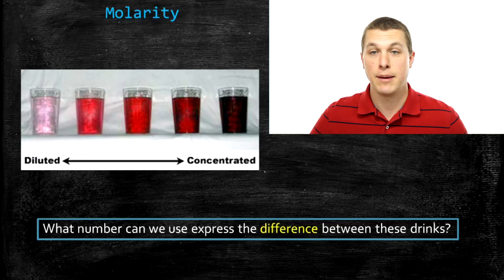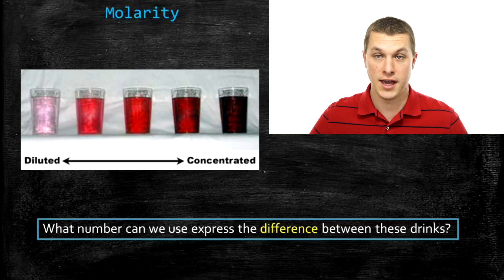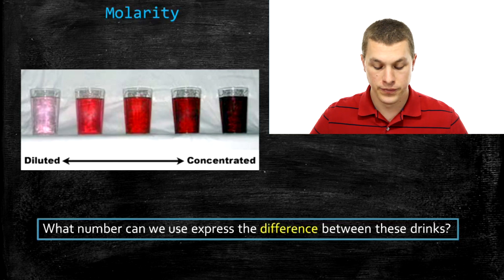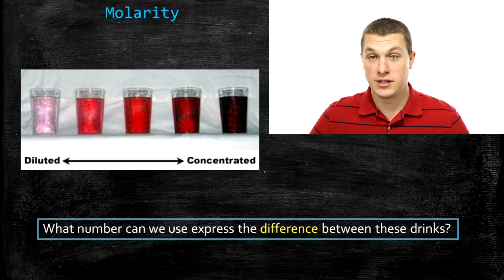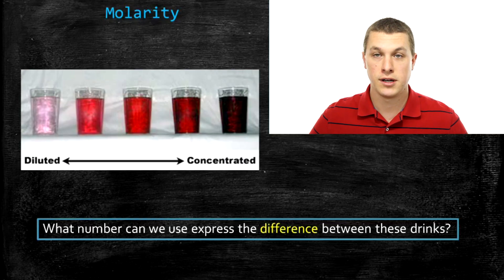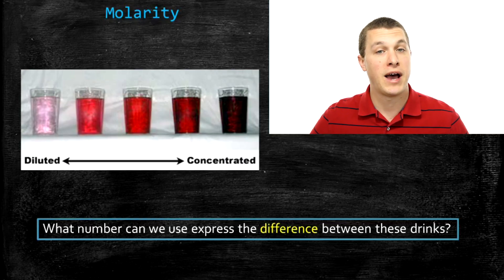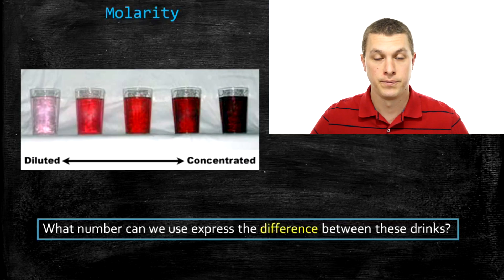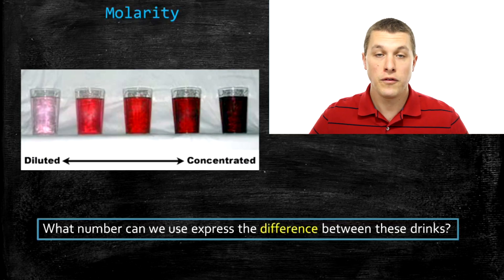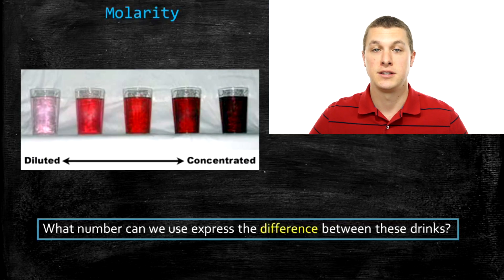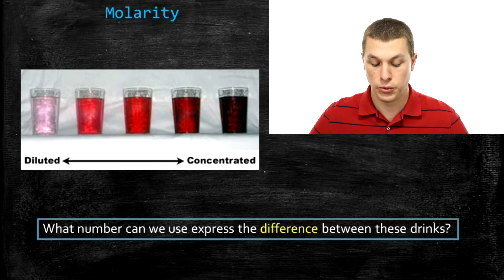We've used the same amount of volume of water in each case, but different amounts of powder. It's nice to be able to look at this and tell what's more diluted and what's more concentrated. But in chemistry, we want to come up with a number that can exactly tell us how much powder there is per volume of liquid. So the goal of molarity is just to come up with a number that can express the difference between these drinks.